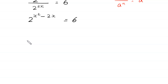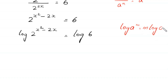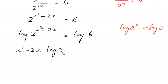Now, from here we take log of both sides. Log of 2 to the power x squared minus 2 times x is equal to log of 6. By using the log property — log of a to the power m is equal to m times log of a — this log of 2 to the power x squared minus 2x will become x squared minus 2 times x, times log of 2, is equal to log of 6.